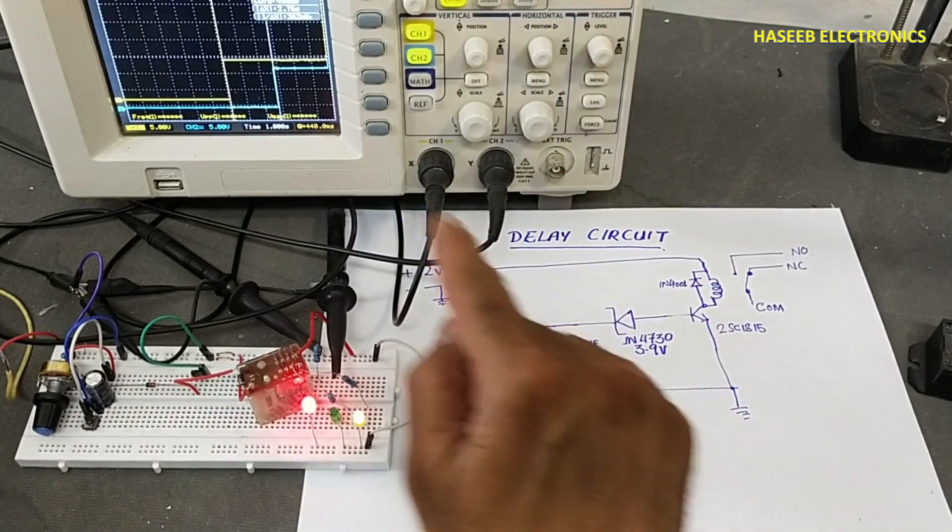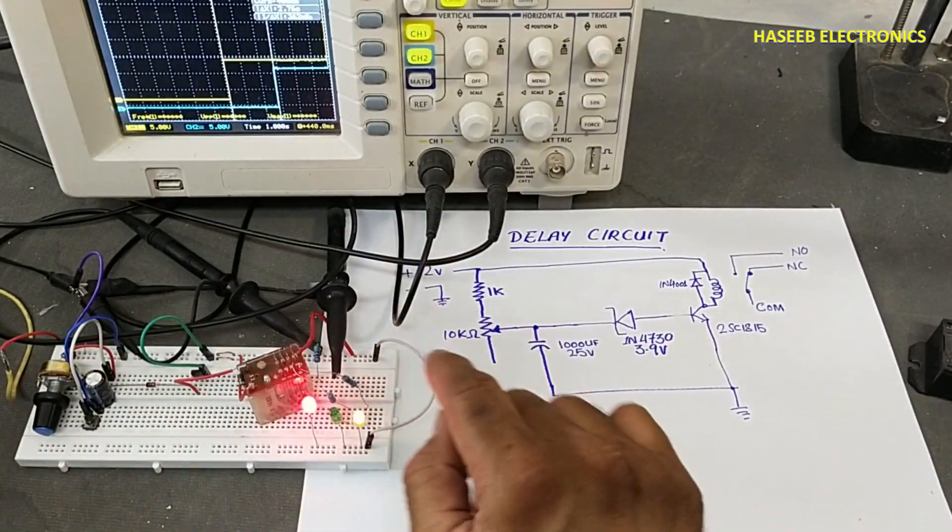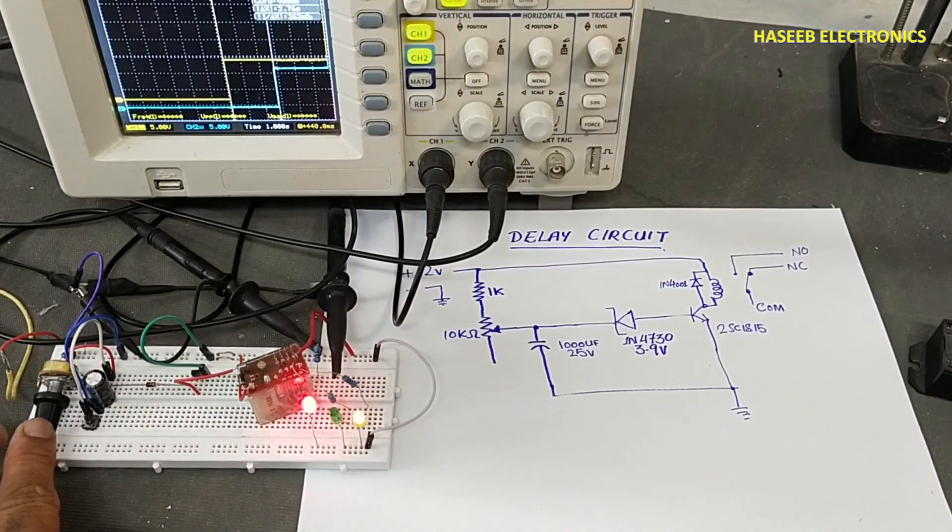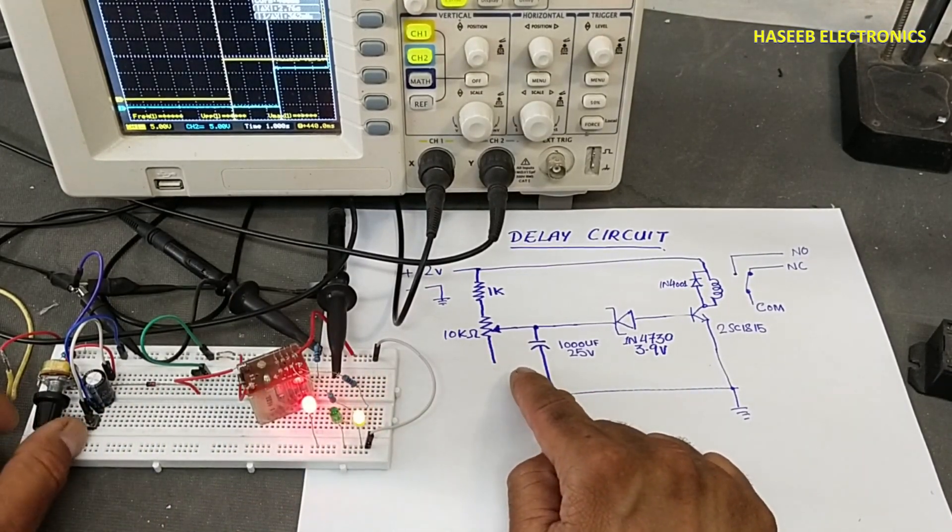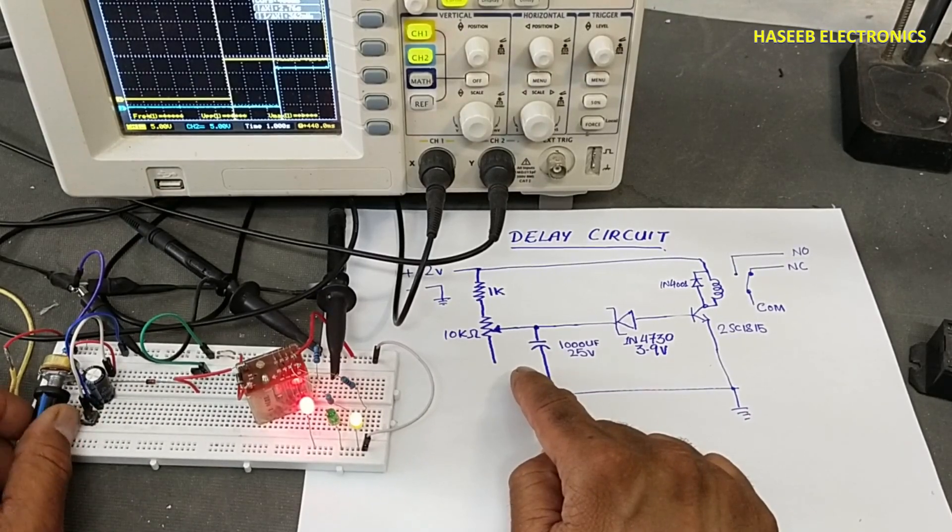Using this configuration, it provided 2.76 seconds when I adjusted this variable potentiometer to maximum position. Now if I set to minimum position...